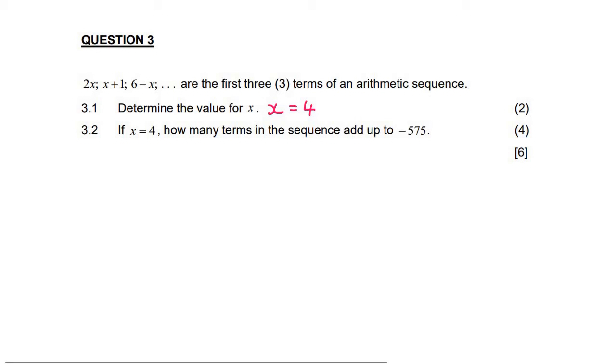And then question 3.2 says, if x is 4, how many terms in the sequence add up to minus 575? So let's go fill in x is 4. And so term 1 is 8, 5, and then 2.